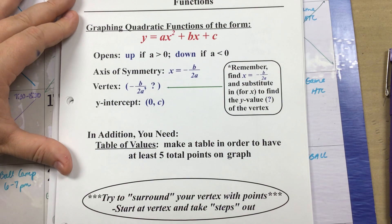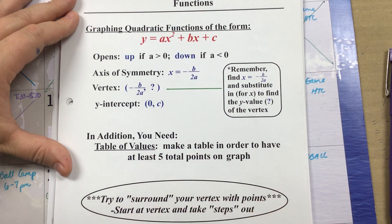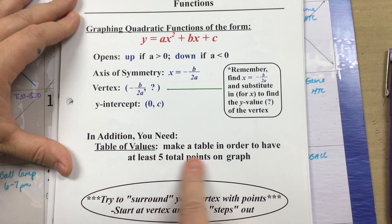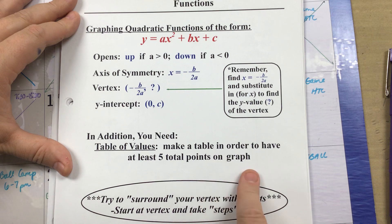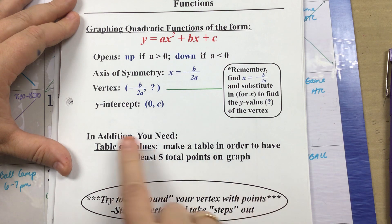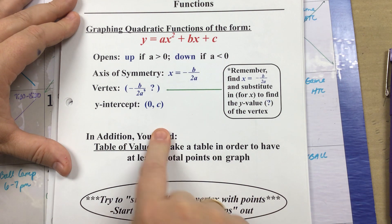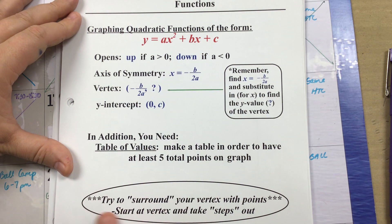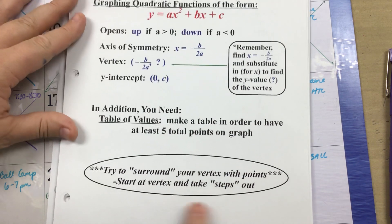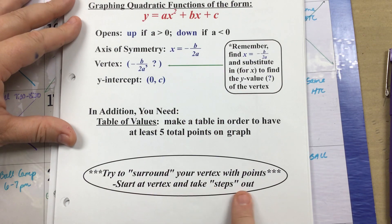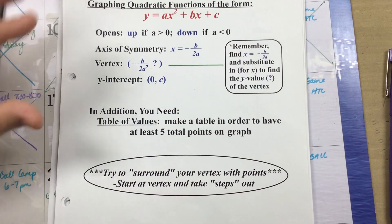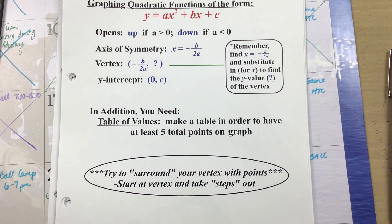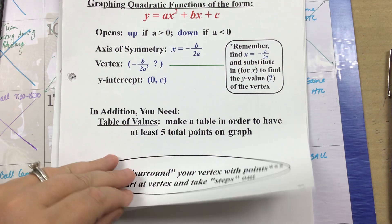When you're graphing, besides having these key features, you also need a table of values. You want at least five total points on your graph. Your y-intercept can be one of them, and your vertex will be one of them as well. You want to surround your vertex with points, so once we figure out the vertex, that helps us identify which points to pick — we'll step out on both sides.